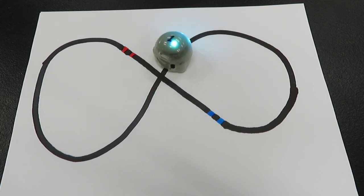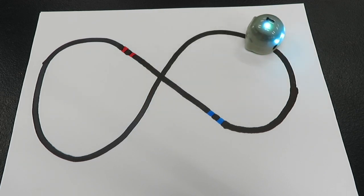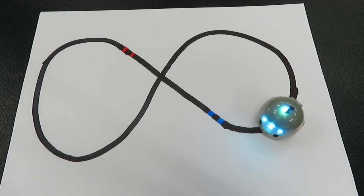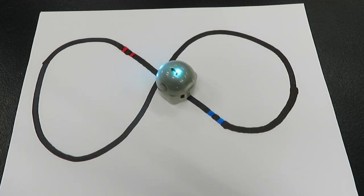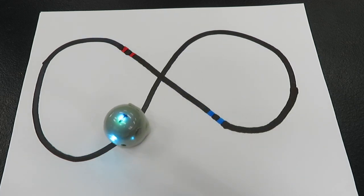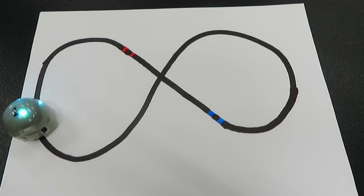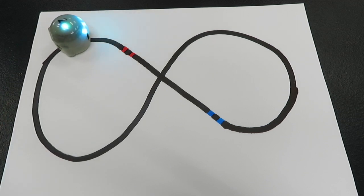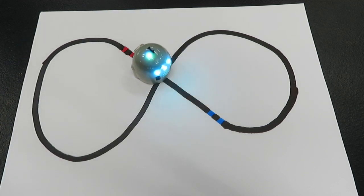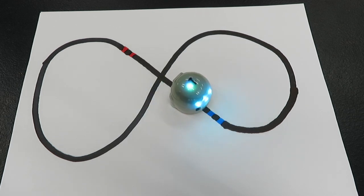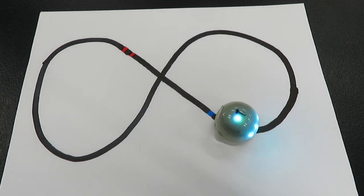This is an Ozobot Evo. As you can see, it follows black lines and those color codes on there. The blue-black-blue and the red-black-red are going to either speed up or slow down the robot. So you can see red-black-red slows it down and then blue-black-blue will speed it up.